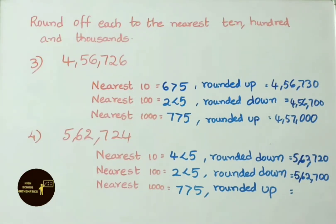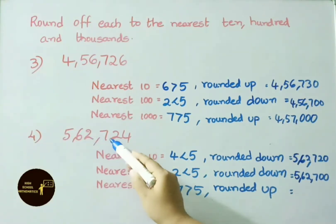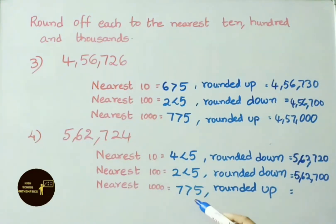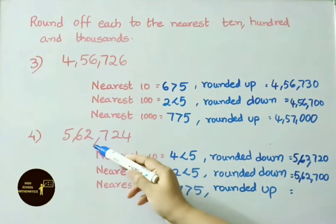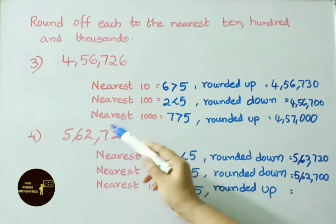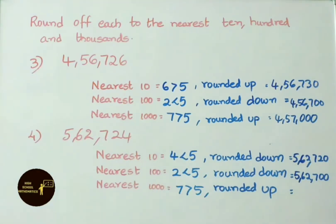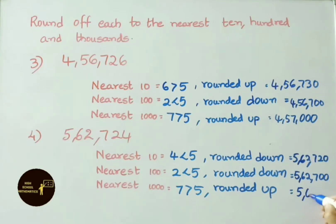Nearest 1000 for 5,62,724: the digit to the right of the 1000s place is 7. Since 7 is greater than 5, we round up — 2000 becomes 3000, and the last three digits become 0s. So the answer is 5,63,000.